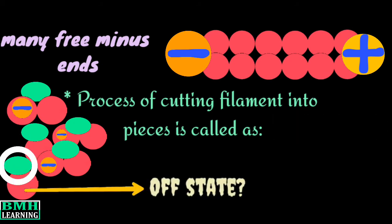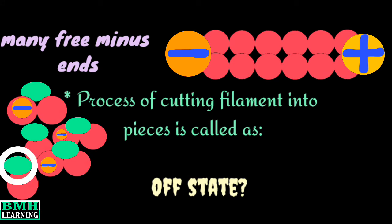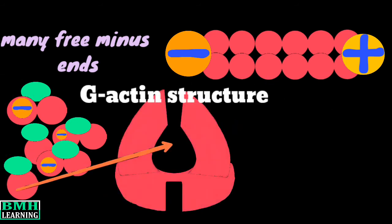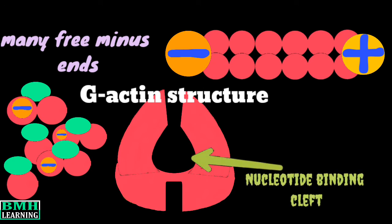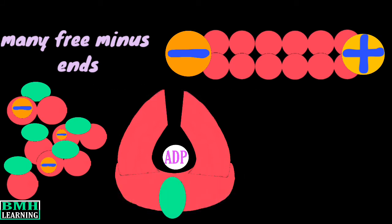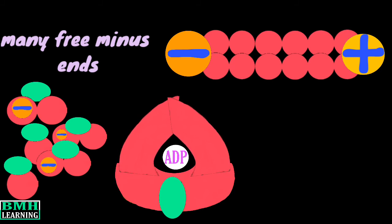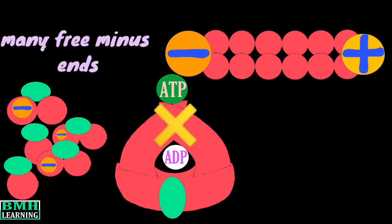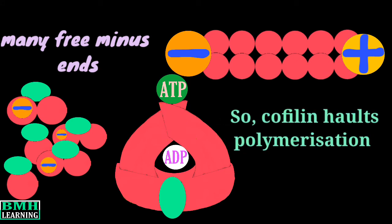The question still remains: how does cofilin keep the detached monomer in the off state, so that the monomer doesn't recharge with ATP and re-polymerize at the plus end? For that we have to look deeper into the G-actin structure. Actin has a nucleotide binding cleft — the site where the nucleotide ATP or ADP binds. The binding of cofilin to G-actin causes the closure of actin's nucleotide binding cleft. This tight or compact pocket does not allow the exchange of ADP with ATP, and hence the monomer cannot be used for polymerization.